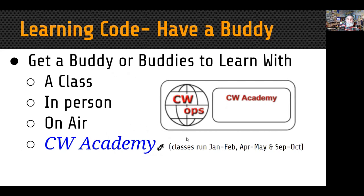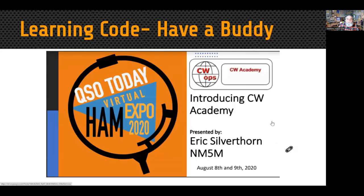Another group is CW Ops. They have something called the CW Academy — a class that takes place in three quarterly sessions: January and February, April and May, and September and October. When you sign up, you're assigned to a specific cohort that meets once or twice a week on a regular basis, plus practice time, and you get together via Zoom just like the Long Island CW group. Eric Silverthorne from the group did a presentation for QSO Today in 2020, and you can click this link to get the video presentation.